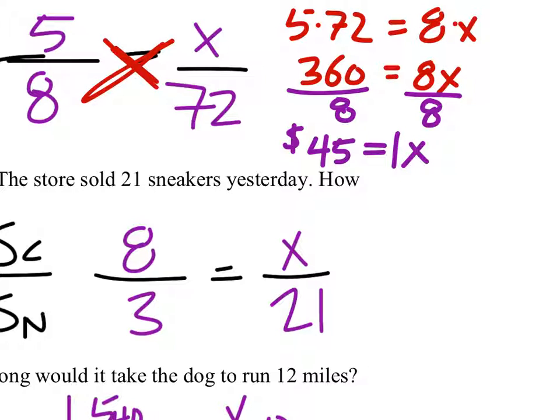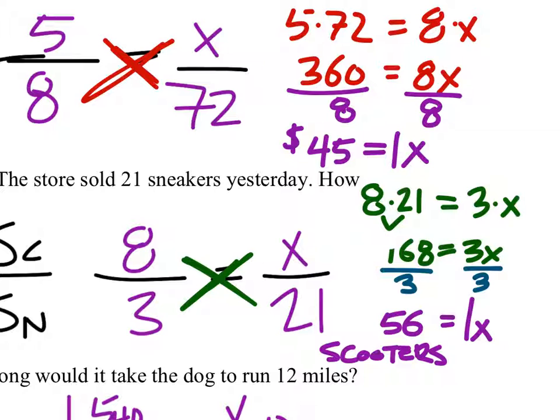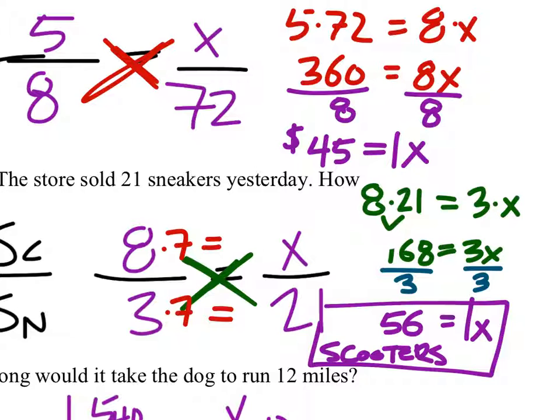All right, this next one, again, cross multiply. So, I got 8 times 21 should equals 3 times the x. So, 8 times 21 is 168 equals 3x. And then we'll divide both sides by 3. And it looks like we'll get 56. So, 1x equals 56 scooters, specifically. On this one, good question on that. See, some of you guys did notice that. 3 times 7 is 21. That's scale factors. So, 8 times 7 is 56 as well. Yeah, and you get to choose. You get to choose which way you like the best.